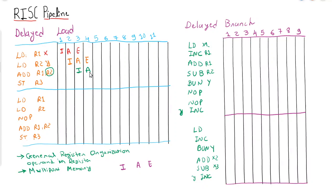This will create a problem. If we try to execute the instruction at that point, instead of the value from memory location Y, we will get some other value into R2. So it will lead to a problem. The solution is to put a delay between those two consecutive instructions. There is a problem between the second load and the add, so how will it be resolved? Let us rewrite the solution using a load with a delay.